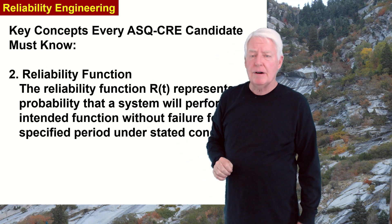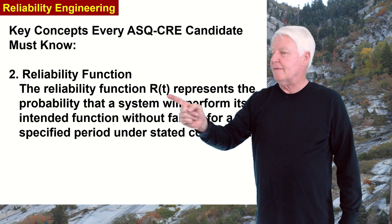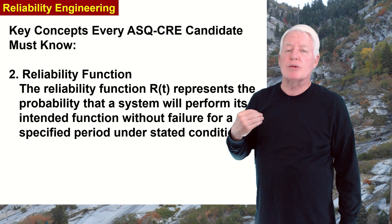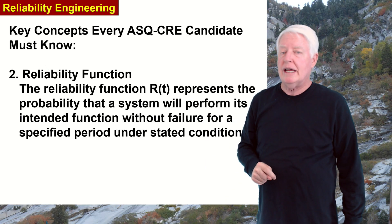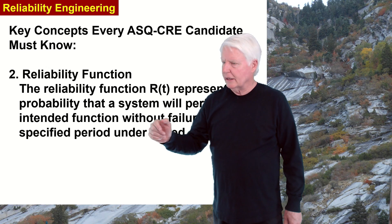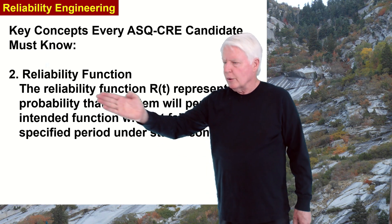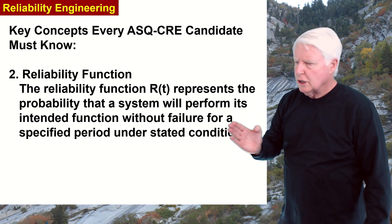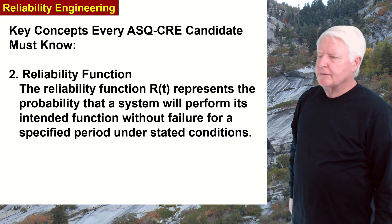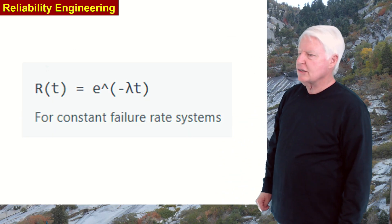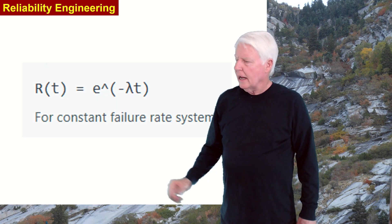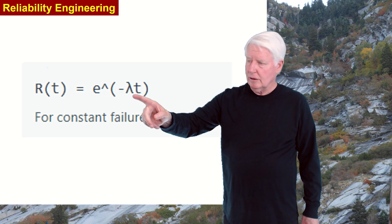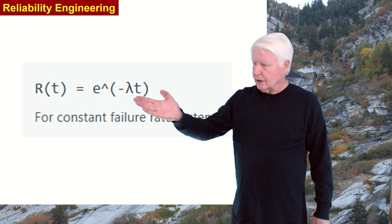The second key concept is the reliability function — reliability at a given point in time. A component that has run for 350 hours: what is its reliability now? Reliability inherently changes with time. The reliability function R(t) represents the probability that a system will perform its intended function without failure for a specified period of time under stated conditions. The formula is R(t) = e^(−λt), where e is the natural log base and λ is the failure rate.